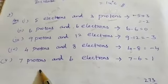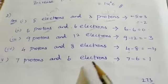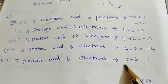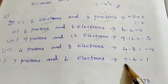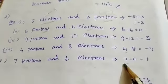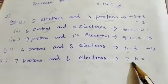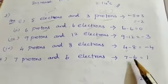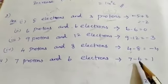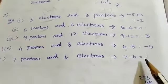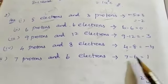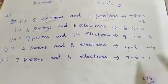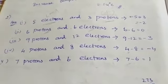Fifth: 7 protons and 6 electrons. 7 protons means plus 7, 6 electrons means minus 6, so this is our solution.